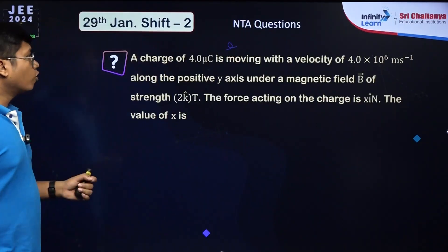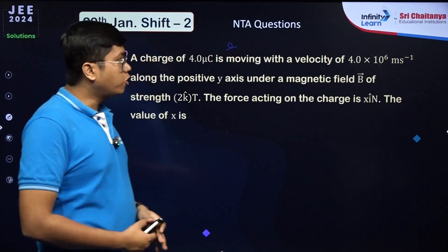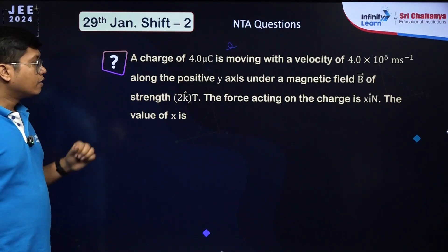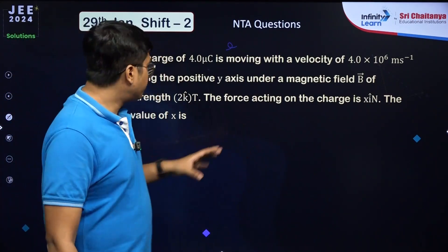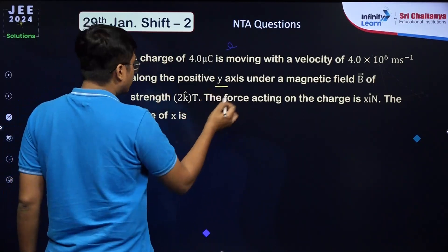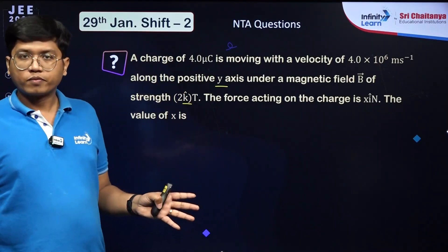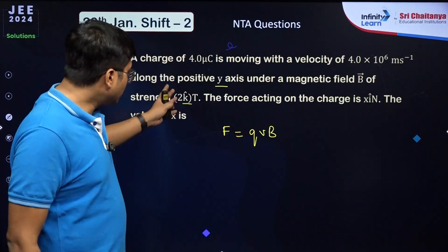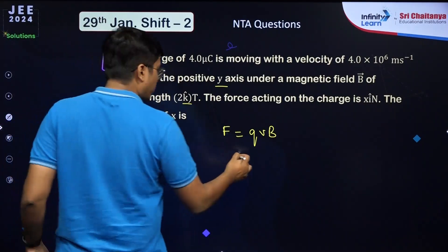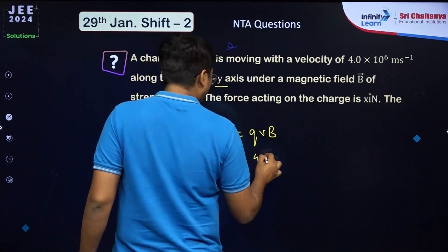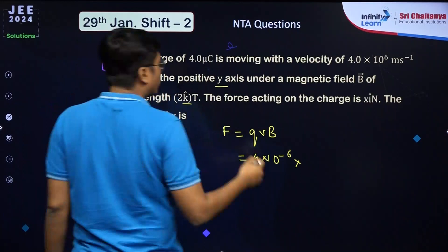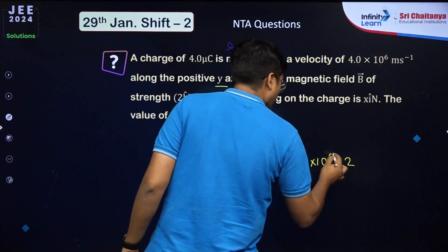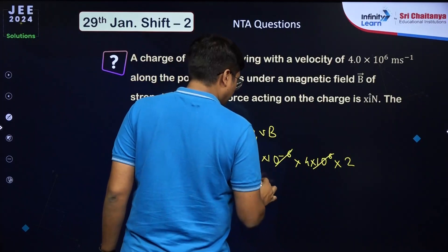A charge of 4 μC moves at 4×10⁶ m/s along the positive y-axis under a magnetic field of 2k̂ Tesla. The velocity and field are perpendicular (θ = 90°), so F = qvB = 4×10⁻⁶ × 4×10⁶ × 2 = 32 N.